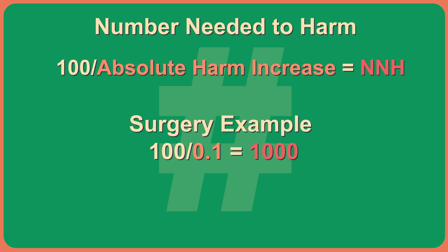With the surgery, the absolute risk increase was 0.1%. Therefore, the NNH is 100 divided by 0.1, or 1,000. That means that for every 1,000 people who have surgery, one extra will have diarrhea. That's much better than for the drug.